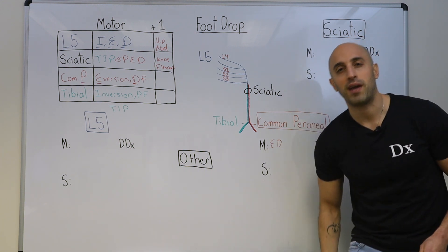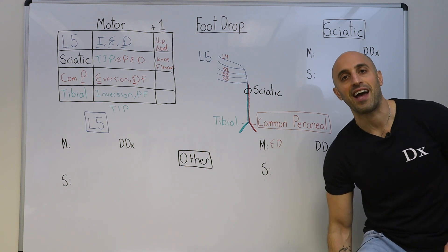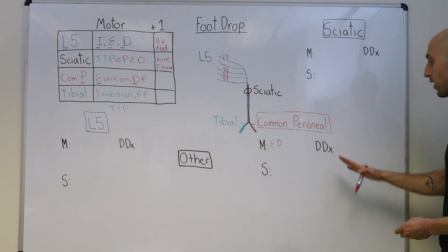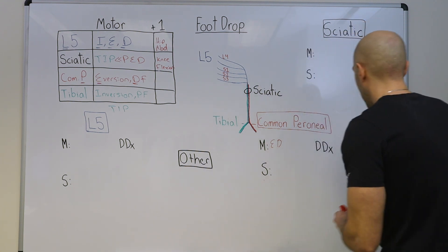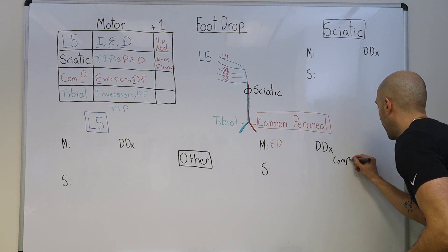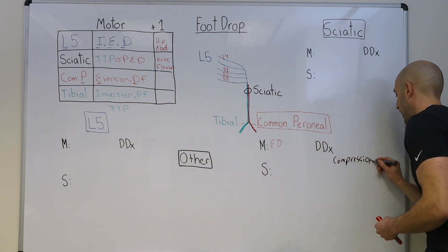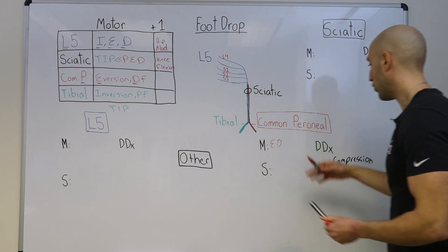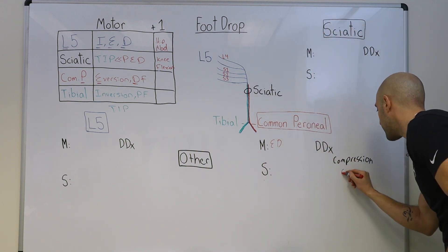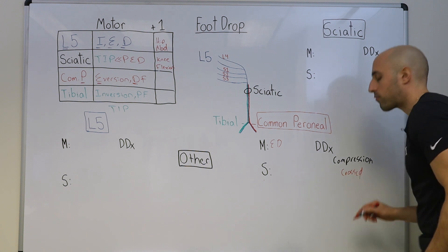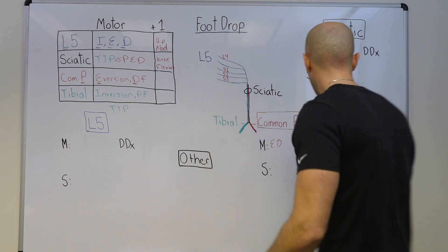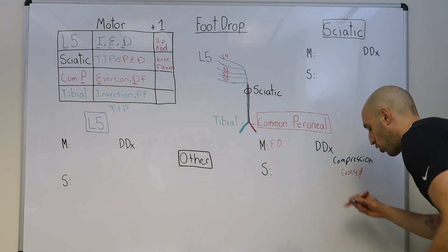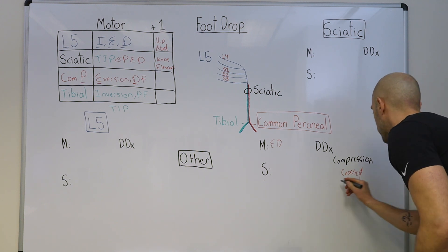The sensory deficits are going to be paresthesias and numbness in the lateral calf and the dorsum of the foot. The differential diagnosis, which is going to be a common theme, is compression at the fibular head. Remember, we started this talk about how a cross leg can lead to numbness. So basically if your legs are crossed for too long, it's the leg on top because that's where the nerve is going through the fibular head. Or if you have trauma to the knee, that can also result in common peroneal neuropathy.